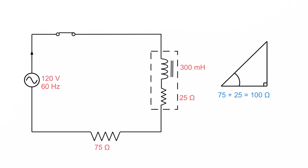When working on an RL circuit, I love triangles — so I get a right triangle drawn up here. I add up total resistance: 75 ohms plus 25 ohms, since they're heading in the same direction and can be added arithmetically, giving 100 ohms of total circuit resistance. Next, I figure out inductive reactance using 2πFL: 6.28 times 60 hertz times 0.3 henries. Punching those numbers in, we get 113 ohms of reactance.